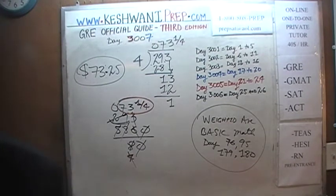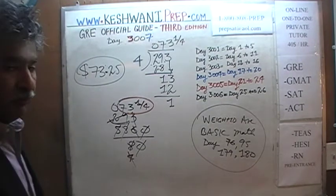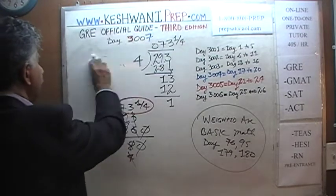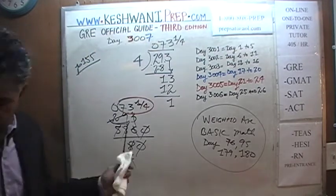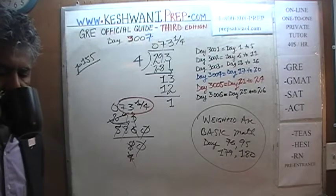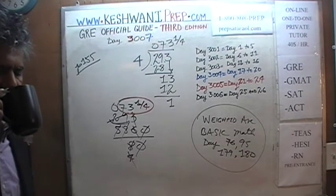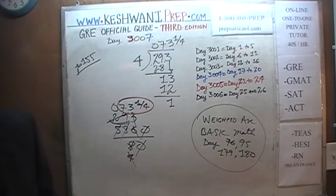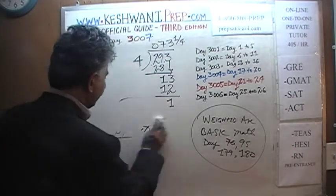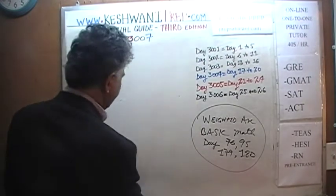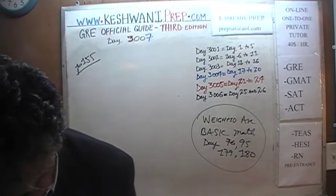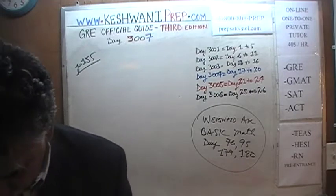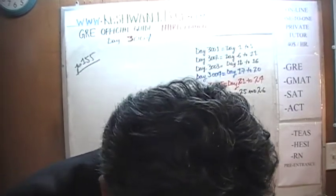Let's do the next problem. The next problem appears on page 155 — turn to it please. We are done with all of these things. On page 155 you will see some very simple, very babyish problems. No big deal.